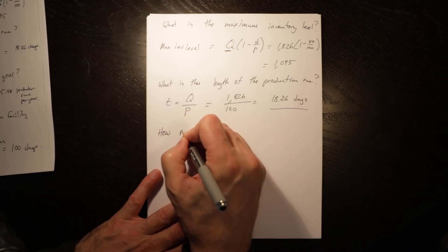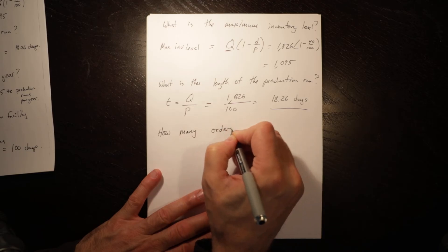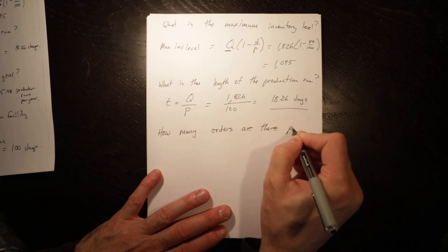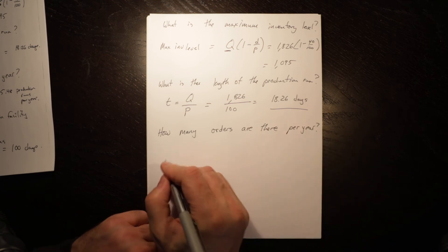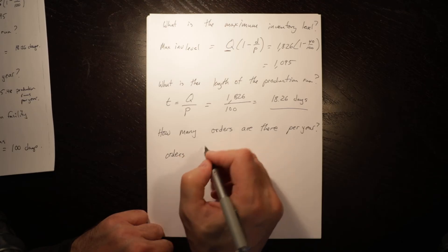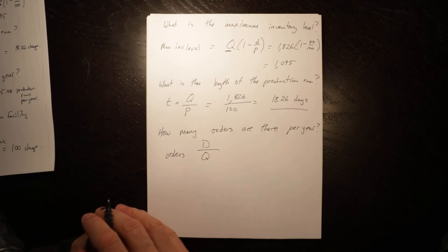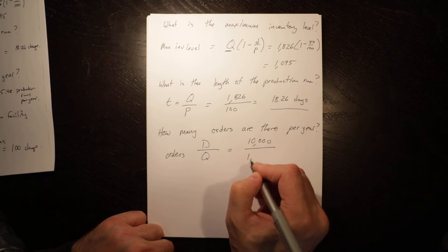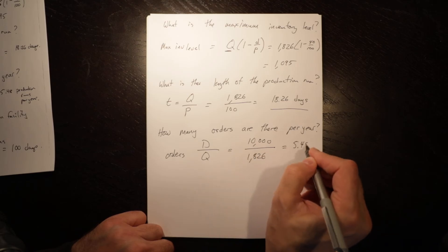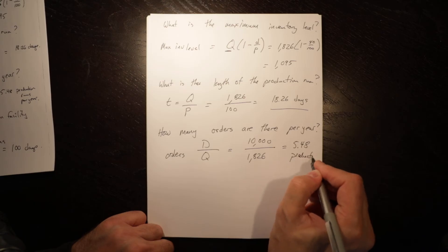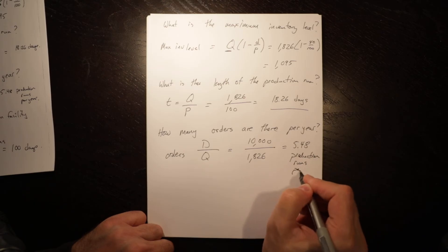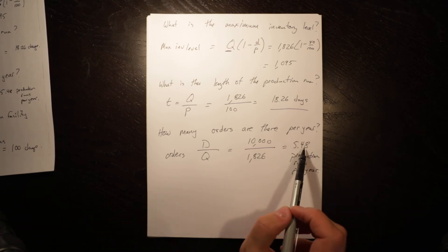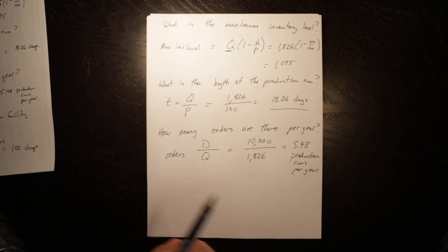So then next question is how many orders are there per year? And that is simply total demand divided by the quantity that you produce. This is just like it was with the EOQ model. It's equal to 10,000 divided by 1826, equals 5.48 production runs per year. So we produce 5.48 batches per year, and each batch takes 18.26 days.